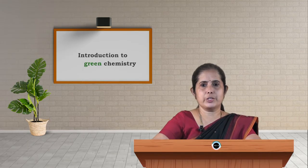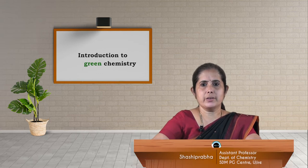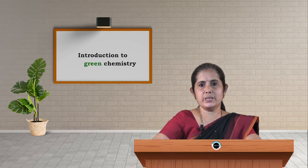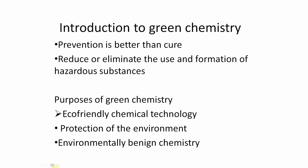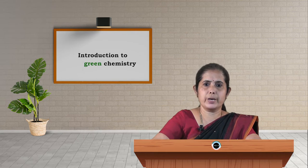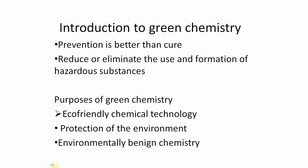Dear students, today we will talk about green chemistry. Nowadays we hear many times words like green, green environment, green chemistry. Let us look into what is green chemistry, or the aim of green chemistry. The aim of green chemistry is to reduce or eliminate the use and the formation of hazardous substances. We all know that these hazardous substances are a threat to the environment, to human life, and to animal life.